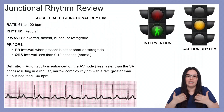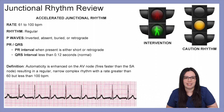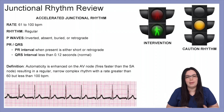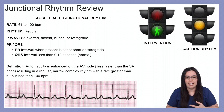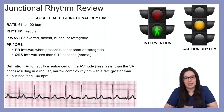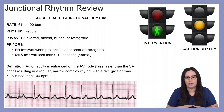Lastly, we're going to look at our accelerated junctional rhythm. The rate is between 61 to 100 beats per minute. The rhythm is regular, and P waves are either inverted, absent, buried, or retrograde. The PR interval when present is either short or retrograde, and the QRS interval remains normal. The definition is that automaticity is enhanced on the AV node, firing faster than the SA node, resulting in a regular narrow complex rhythm with a rate greater than 60 but less than 100.